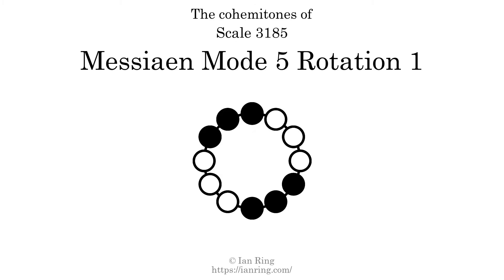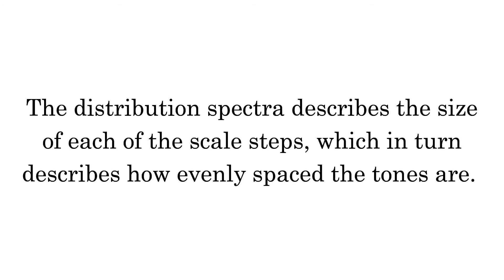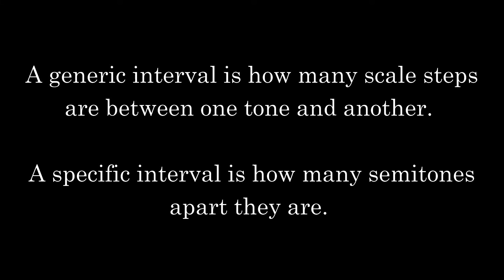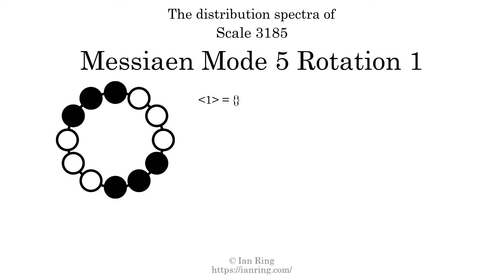Co-hammertones are instances where 2 hammertones are beside each other. This scale has 2 co-hammertones, at the positions here and here. The distribution spectra describes the size of each of the scale steps, which in turn describes how evenly spaced the tones are. A generic interval is how many scale steps are between one tone and another. A specific interval is how many semitones apart they are. The generic interval of 1 scale step comes in 2 different specific interval sizes: 1 semitone and 4 semitones.